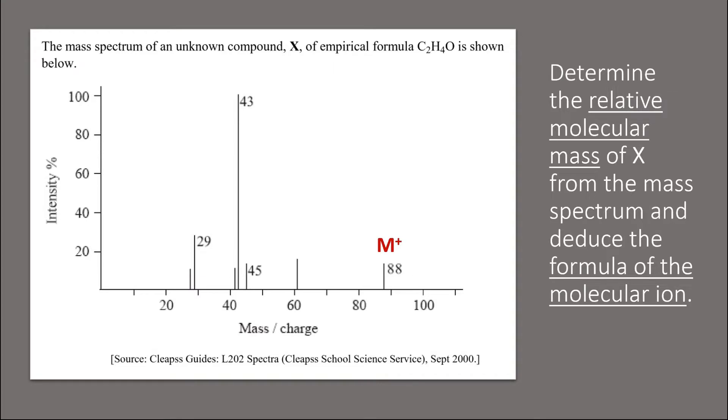The maximum mass detected here is the relative molecular mass of the compound and the peak belongs to what we call as the molecular ion M+. So the relative molecular mass of X is 88. The word relative means that it's being compared to something else, in this case to an atom of carbon-12 isotope.